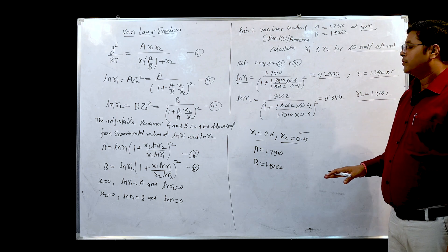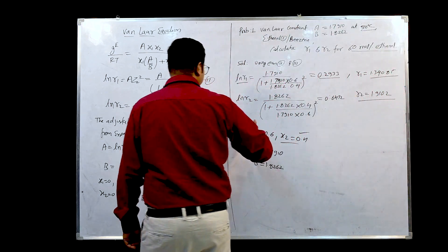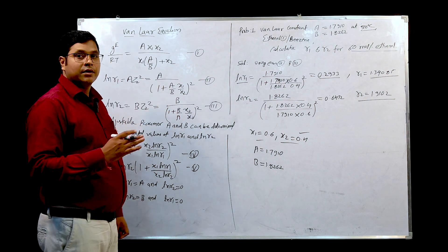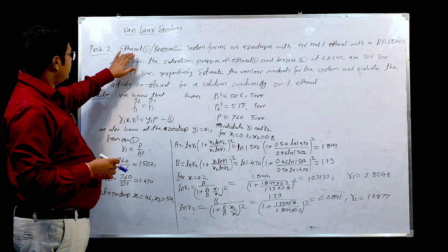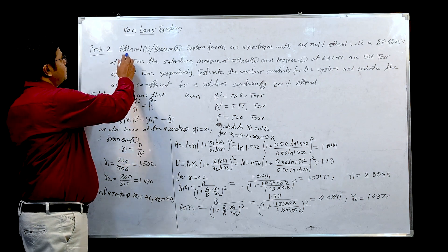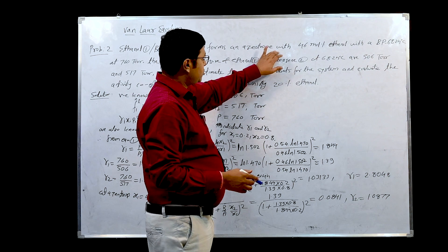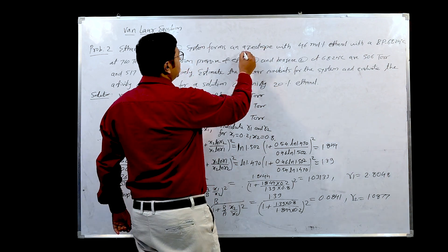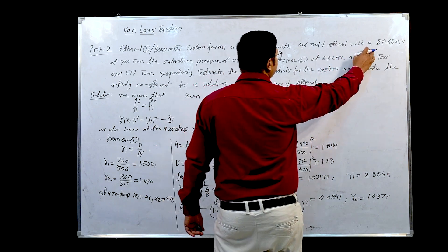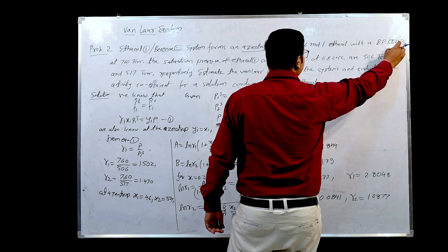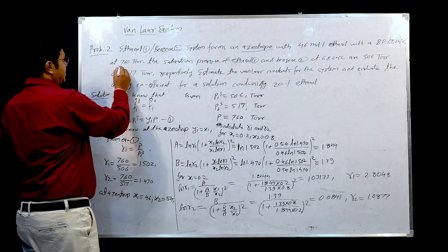Let us take one more problem to find the activity coefficient of given components. In this example, it is once again a mixture of ethanol and benzene, where the system forms an azeotrope — a new term introduced here — with 46 mole percent ethanol at a boiling point of 68.24°C at 760 Torr.